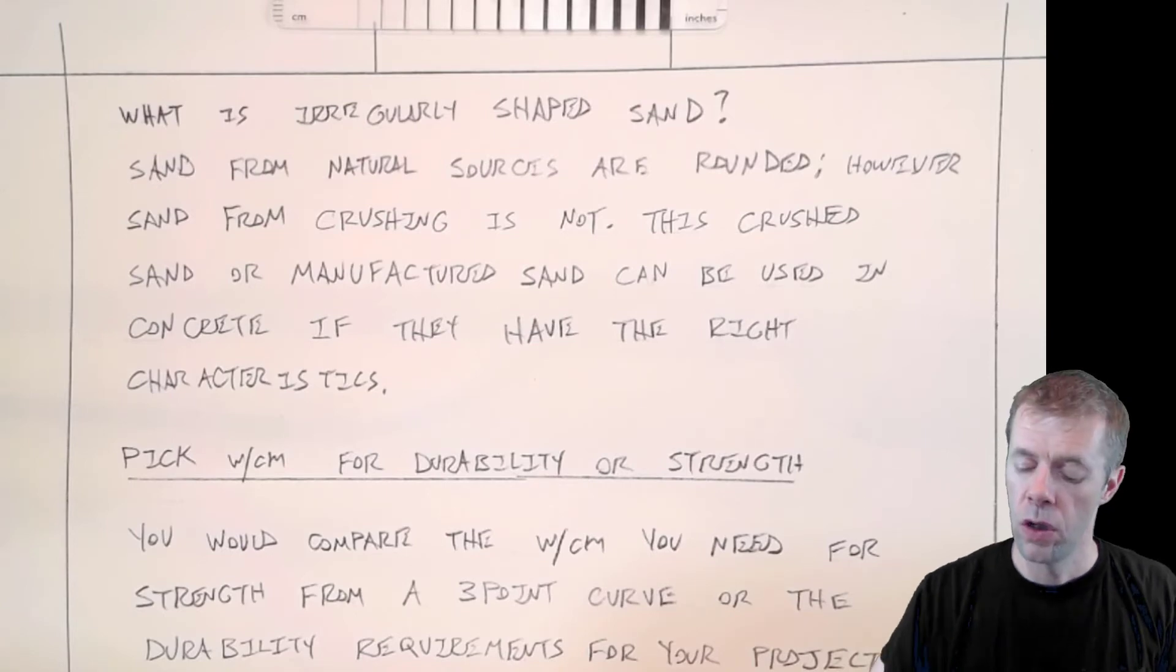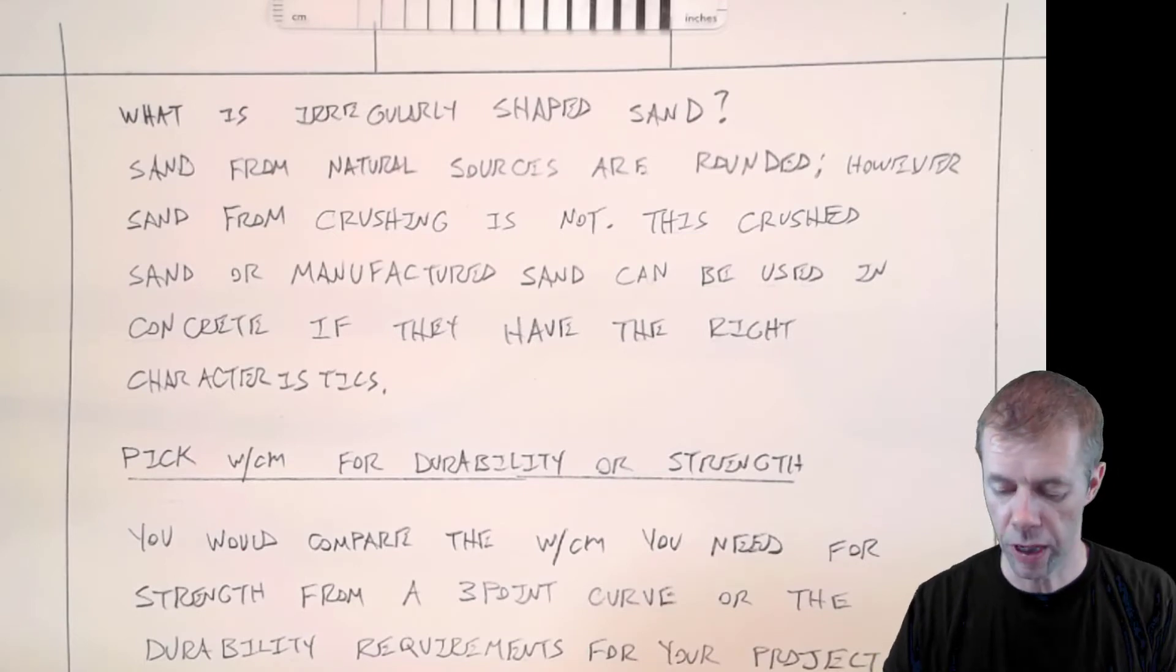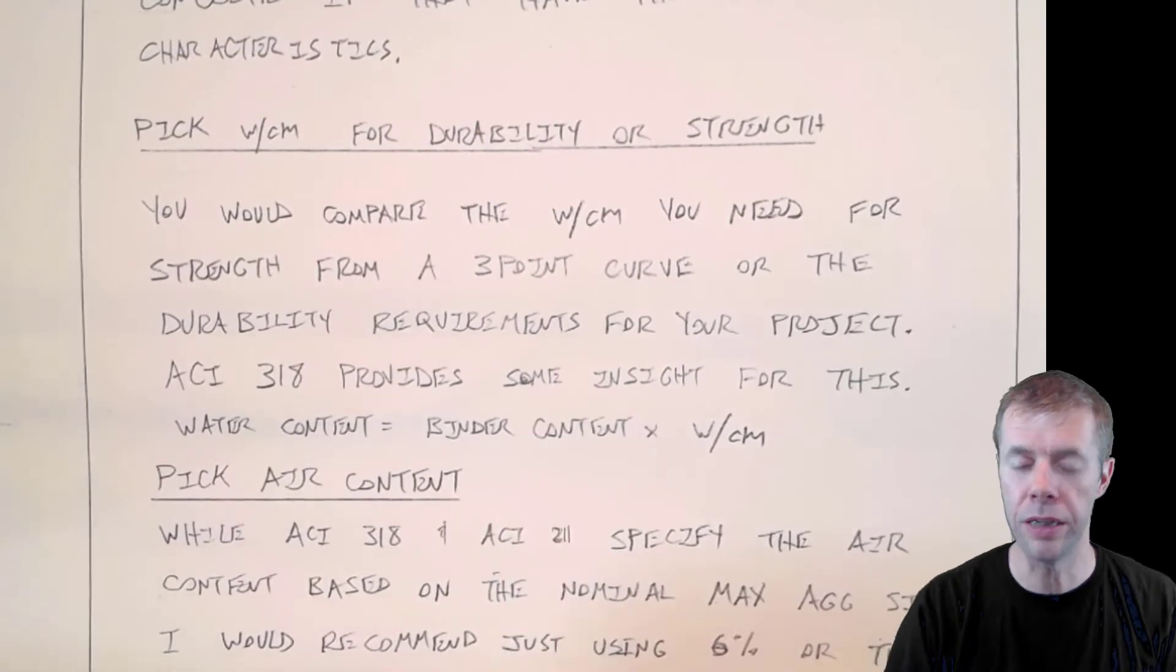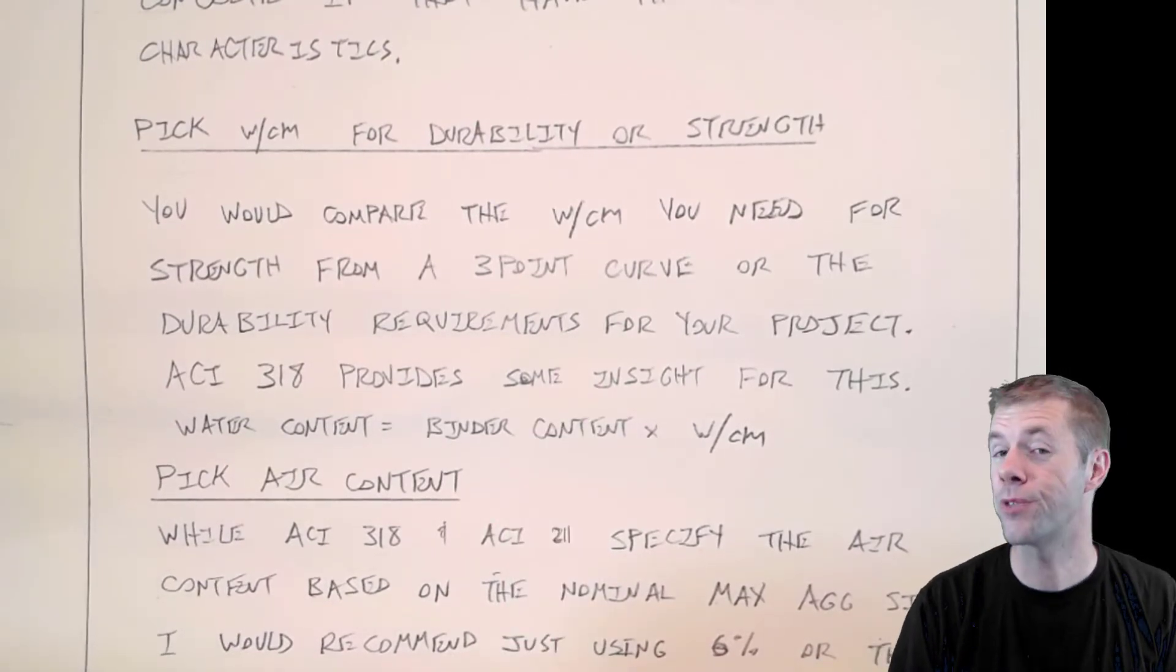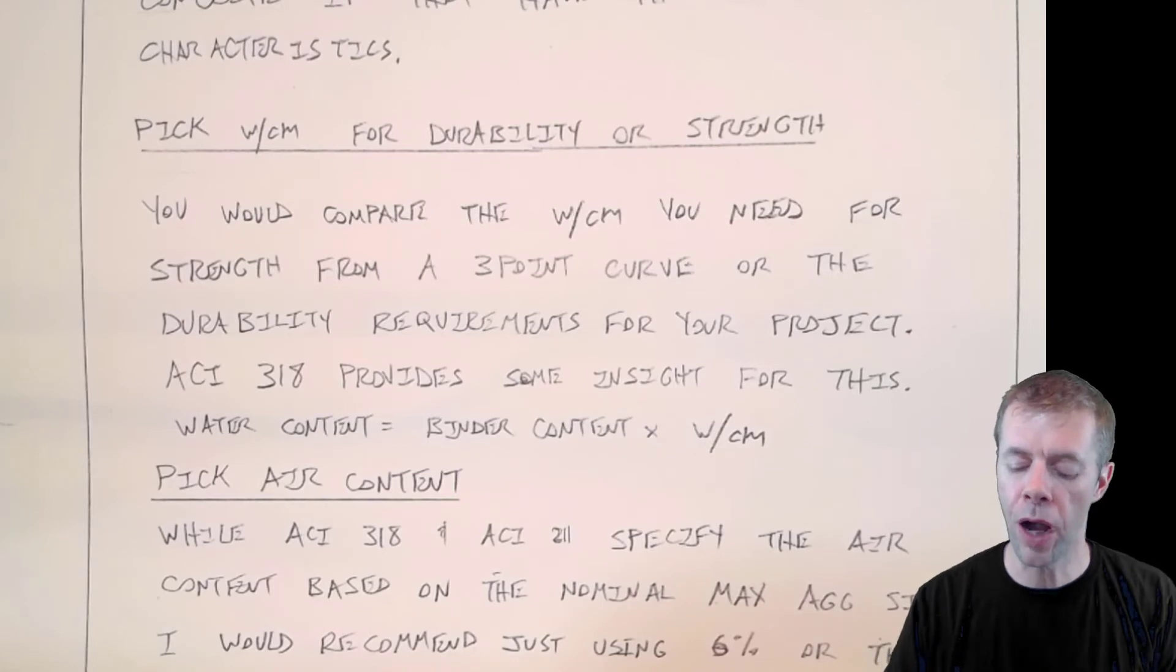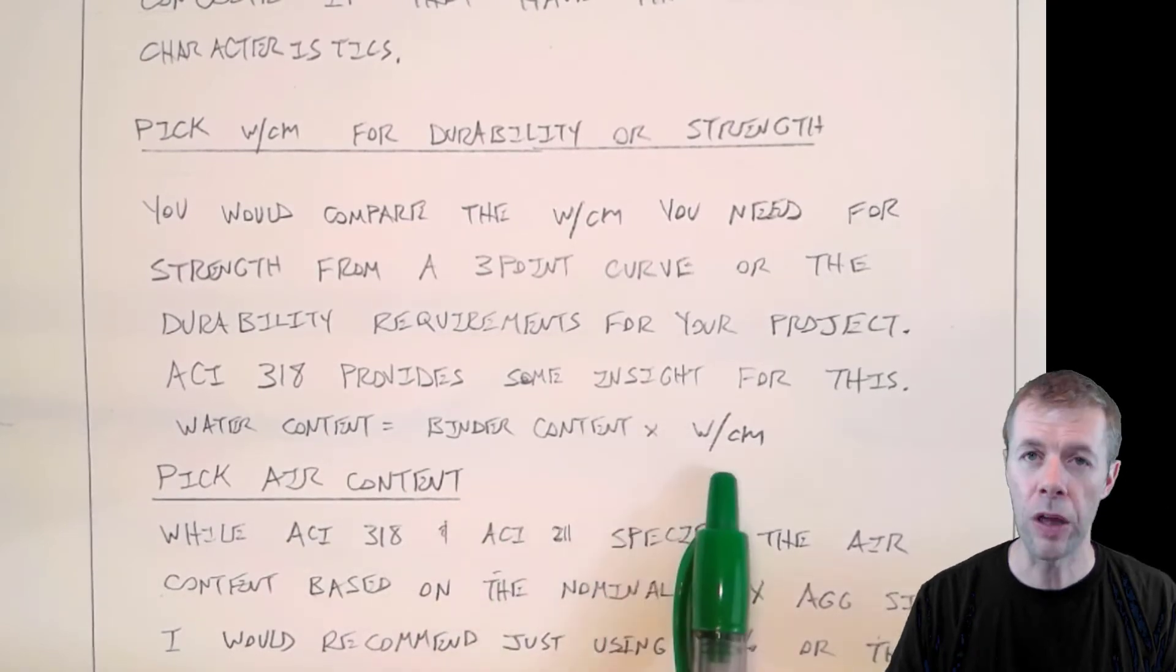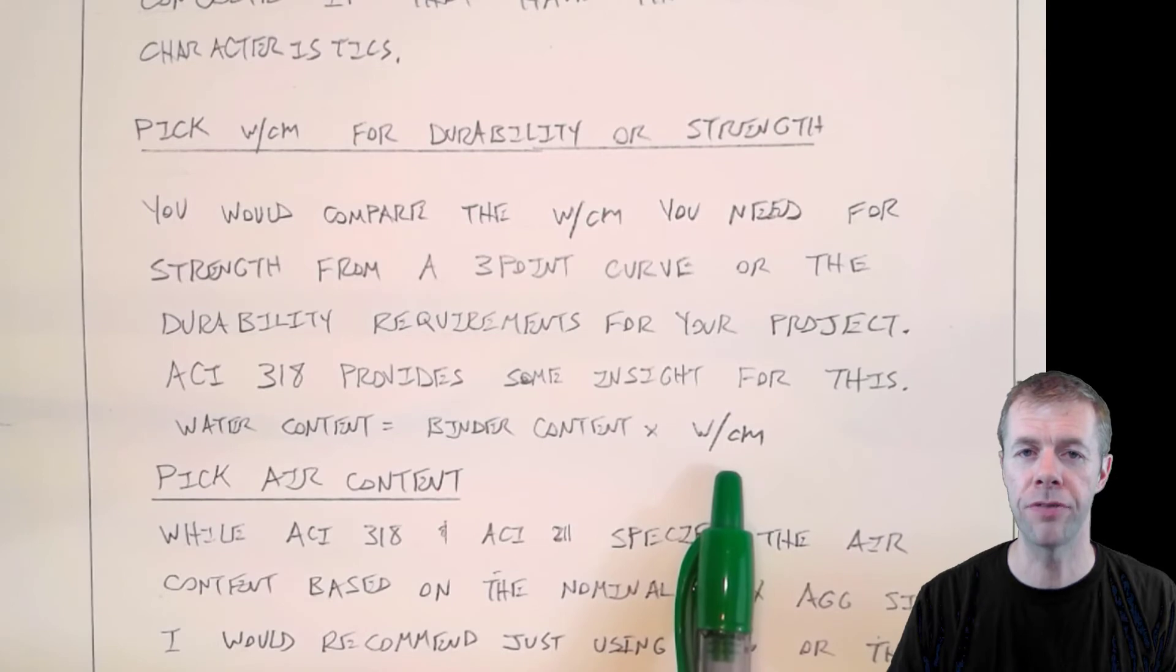So after all those corrections, now you have to pick your water-cement ratio for durability or strength. And you would compare the water-cement ratio you need for strength from a three-point curve, talked about three-point curves in a previous video, or from the durability requirements. And as I've again talked about in a previous video, ACI 318 provides some insights into some at least first shot at designing concrete mixtures for durability. But this simple equation helps you out. The water content you need is equal to the binder content, that's from the first step, multiplied by the ultimate water-cement ratio you have to have for your concrete mixture.